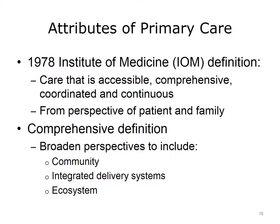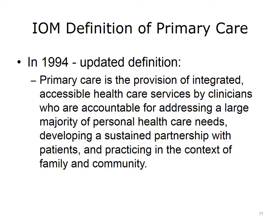Primary care can also be defined as a set of attributes. In 1978, the Institute of Medicine defined primary care as care that is accessible, comprehensive, coordinated, and continuous. This definition looks at primary care from the perspective of the patient and the family. In 1994, the Institute of Medicine Committee on the Future of Primary Care updated the definition as the provision of integrated, accessible healthcare services by clinicians who are accountable for addressing a large majority of personal healthcare needs, developing a sustained partnership with patients, and practicing in the context of family and community.